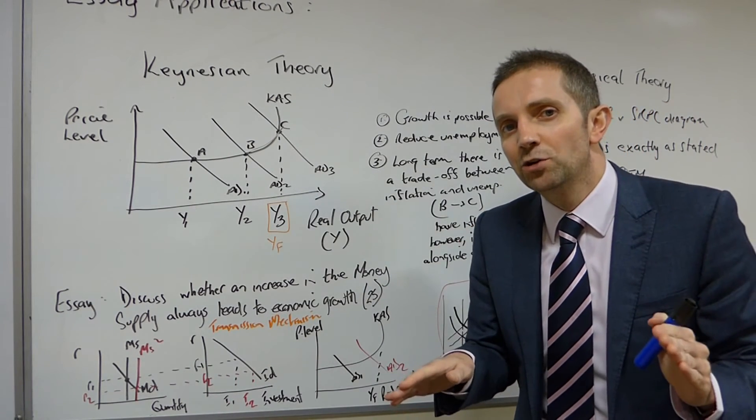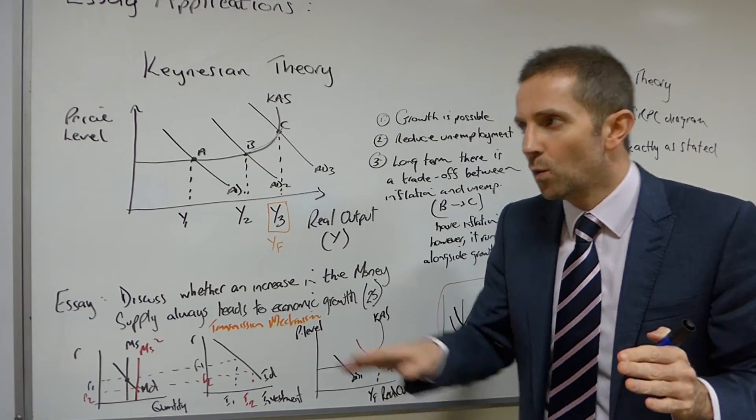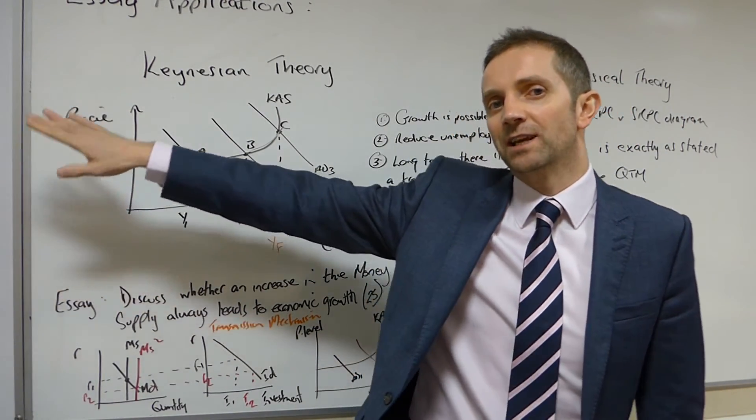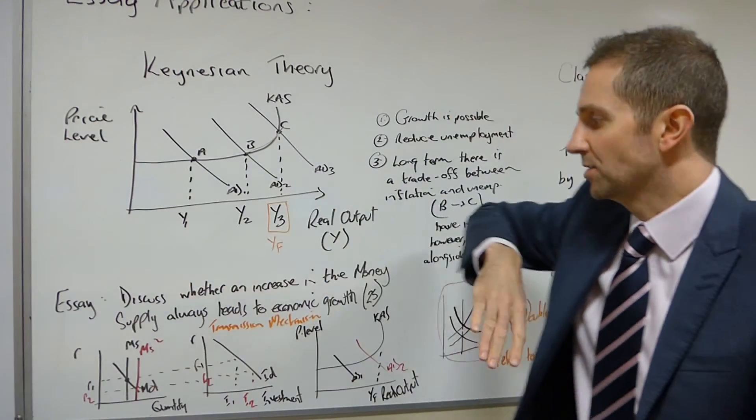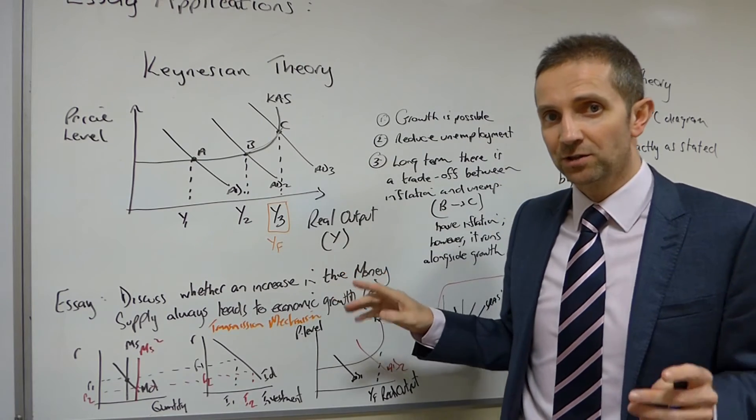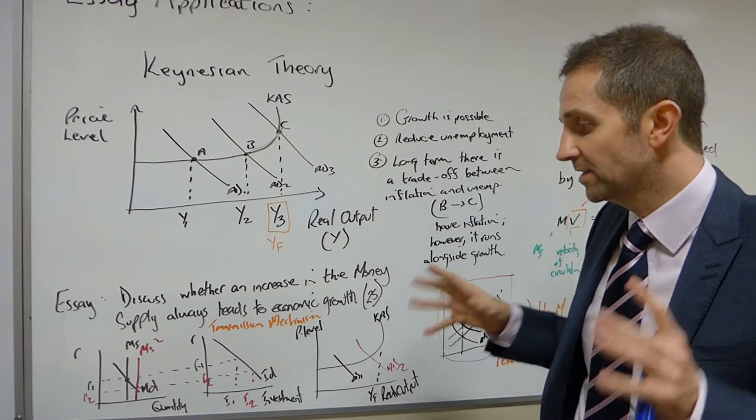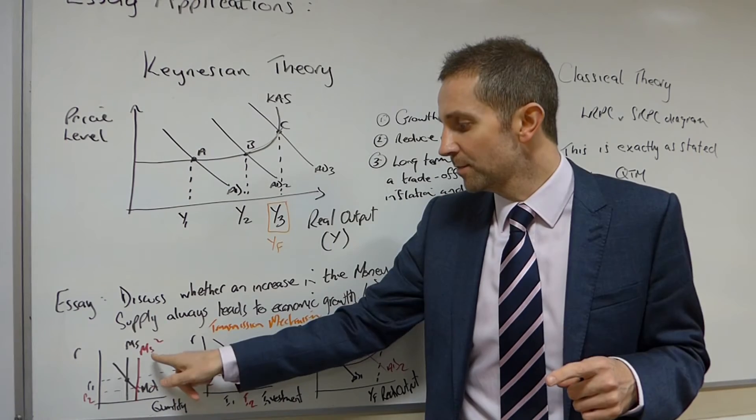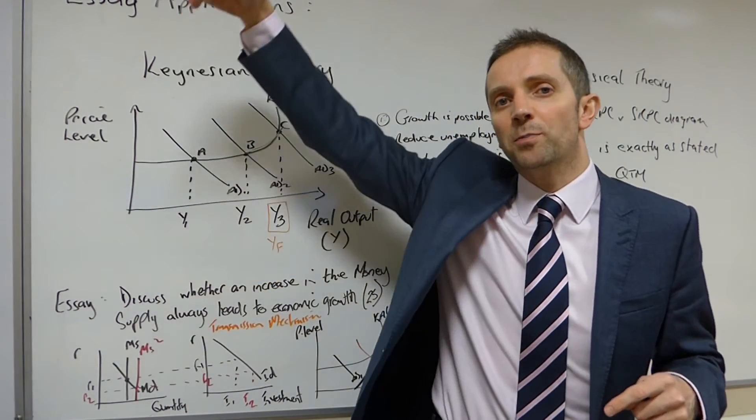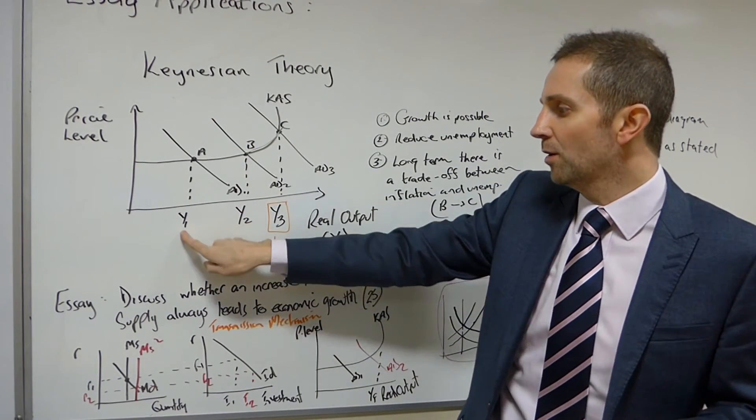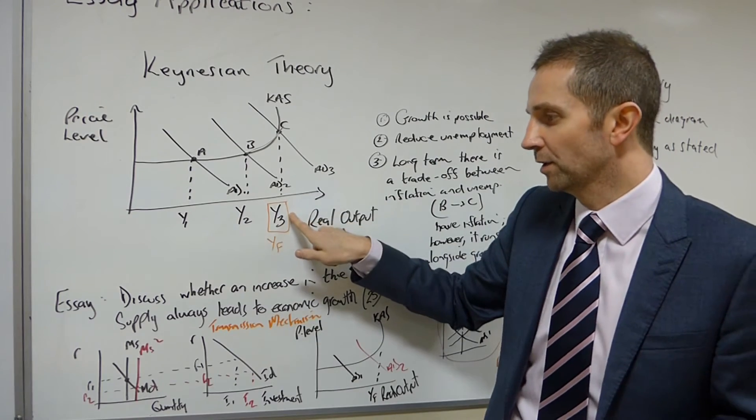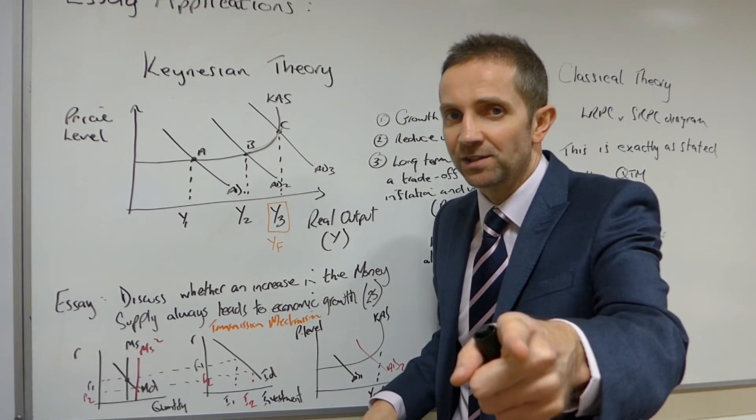However, you then could contrast this with what we've just talked about on the previous board with regards to the classical case or the Milton Friedman case. And say, well, actually, Friedman would argue the opposite because Friedman and the classical economists would say, no, this isn't the case. They would say that by doing this, increasing the money supply, all you're going to do is stoke up inflation and you'll not be able to move from Y1 to Y2 to Y3.